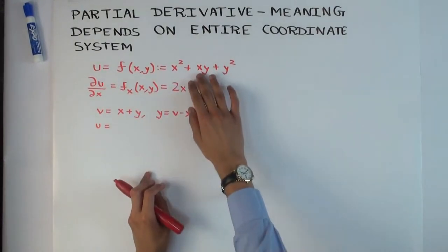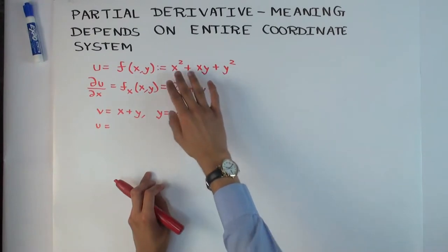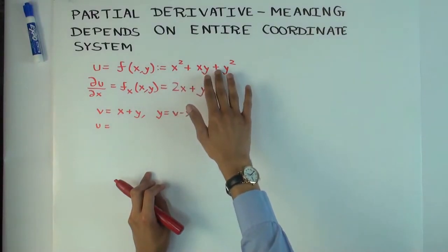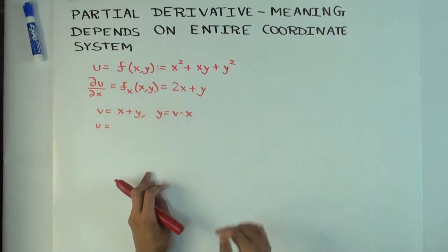2x plus y. What happens to y squared goes to 0, xy differentiates to y, xy differentiates to 2x, so you differentiate with respect to x holding y constant.